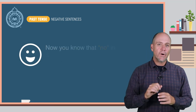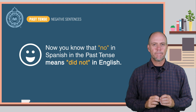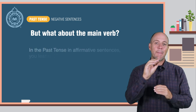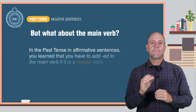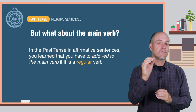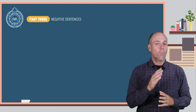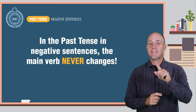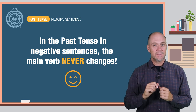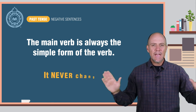Now you know that 'no' in Spanish in the past tense means 'did not' in English. But what about the main verb? In the previous lesson about the past tense in affirmative sentences, you learned that you have to add '-ed' to the main verb if it is a regular verb, or if the verb is irregular, learn the new form for the past tense. Well, I have good news for you. In the past tense in negative sentences, the main verb never changes. The main verb is always the simple form of the verb — it never changes.